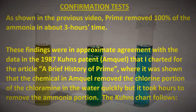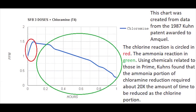As shown in the previous video, Prime removed 100% of the ammonia in about three hours. These findings were in approximate agreement with the data in the 1987 Kuhn's patent for Amquel, where it was shown that the chemical in Amquel removed the chlorine portion of chloramine quickly, but took hours to remove the ammonia portion. Using chemicals related to those in Prime, Kuhn's found that the ammonia portion of chloramine reduction required about 20 times the amount of time to be reduced as the chlorine portion.